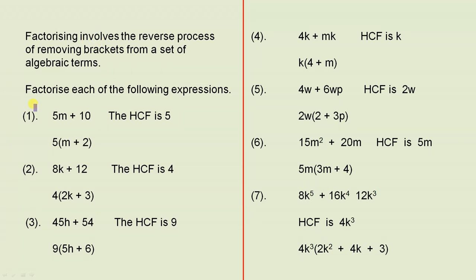Number one, 5m plus 10. So here we don't have any brackets. The idea is to change these terms where brackets are involved. The important thing is to find the HCF, that is the highest common factor. That is the highest number or the highest letter or a combination that will divide into both of these terms. So we can see that 5 divides into 5m and into 10. So that's what we put outside the brackets.